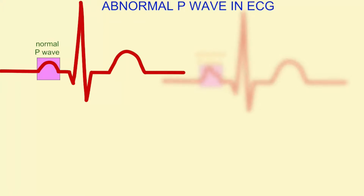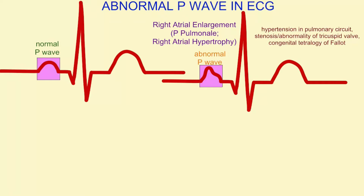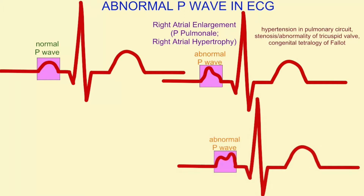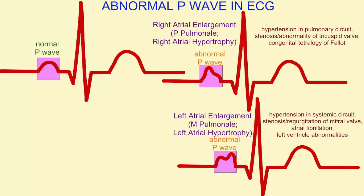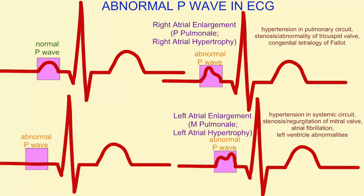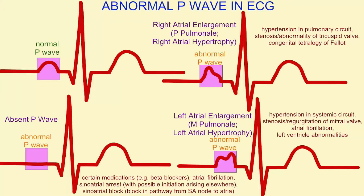The P wave is the normal electrical change due to the depolarization of the atria, but there are a number of abnormal forms of the P wave which could present in an ECG. These could be caused by the enlargement of the right atrium or the enlargement of the left atrium. The P wave could even be absent. These abnormal P waves can be caused by hypertension, malformations of heart valves, certain medications, and other causes.